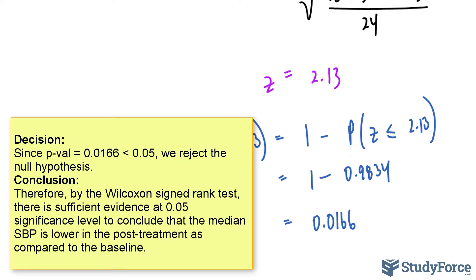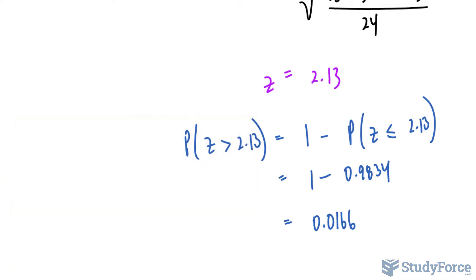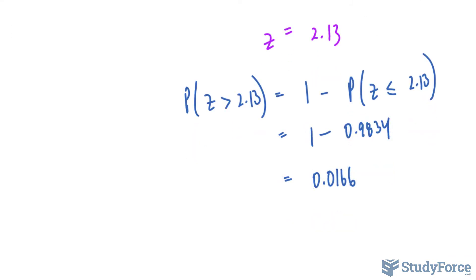So, we conclude that by the Wilcoxon signed rank test, there is sufficient evidence at 0.05 significance level to conclude that the median systolic blood pressure is lower in the post-treatment as compared to the baseline. And this conclusion has more merit than the conclusion we used when we used the signed test instead. This has more statistical power. And so, there you have it.